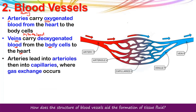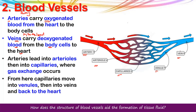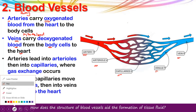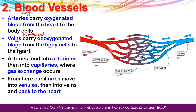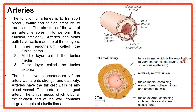Arteries keep dividing and branching into arterioles, and these arterioles branch out into capillaries, where gaseous exchange actually takes place. These capillaries then start to join up, forming venules, and venules join to make up the vein, which brings back the deoxygenated blood to the heart. So: arteries → arterioles → capillaries → venules → veins.